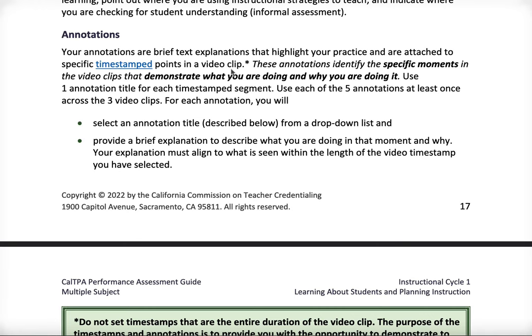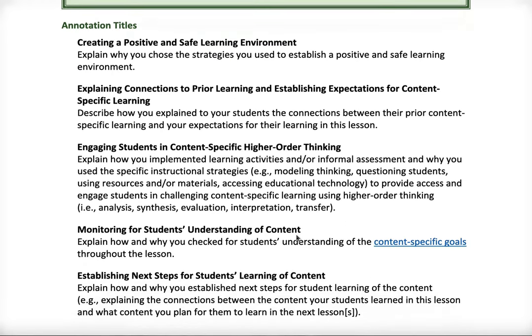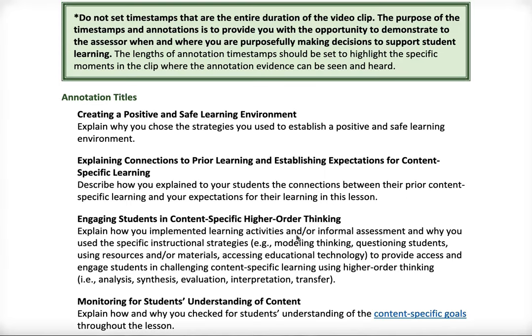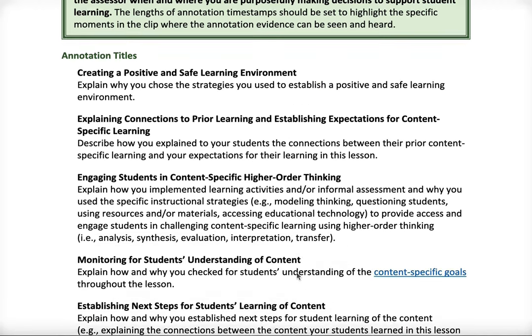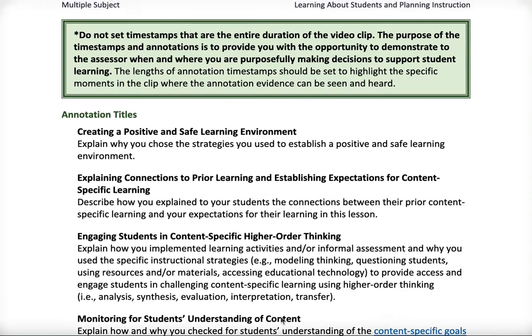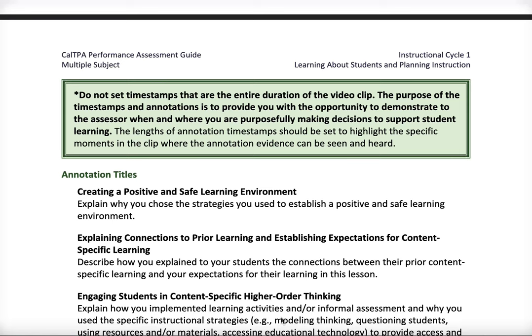One thing that's really important — and they put this in a green box on purpose — is that they really want you to timestamp not the duration of your video clip, but the specific moments where these teacher moves and instructional strategies are taking place. If you do a timestamp that spans your entire video, there's actually a condition code for that. I've seen it more recently in scores — a couple of students received that condition code, and that's the first time I've seen it as a TPA coordinator. So make sure your timestamps are as specific in timeframe as they can be, not something like minute one to minute five.